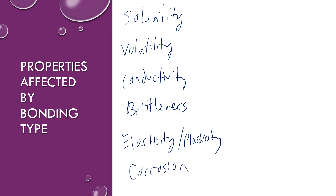Solubility refers to whether a compound is going to be soluble or insoluble in water or other solvents. Ionic compounds and polar covalent compounds tend to be soluble in water — not 100%, but tend to be — whereas nonpolar covalent compounds tend to be soluble in nonpolar solvents, but not in water.